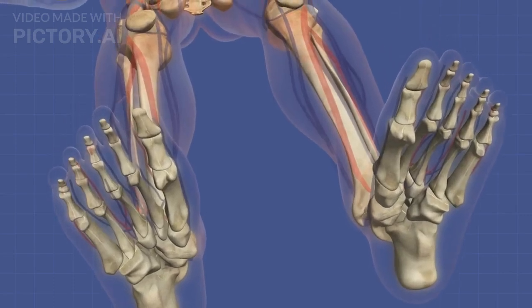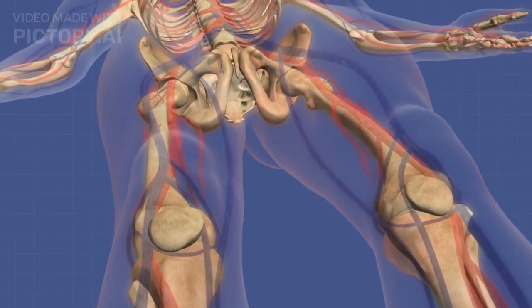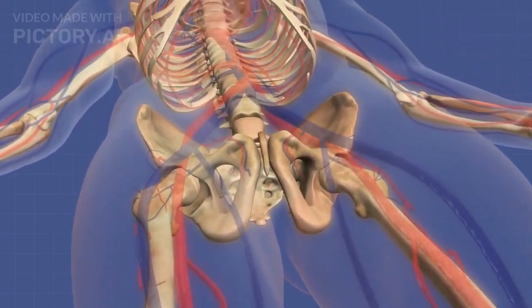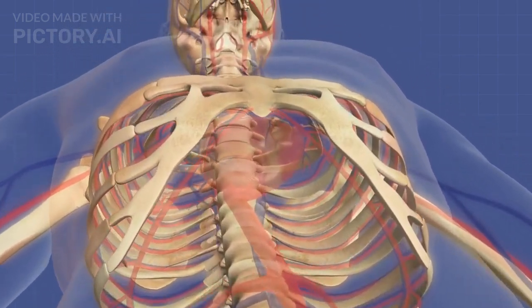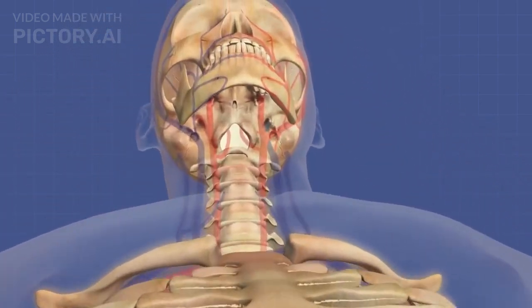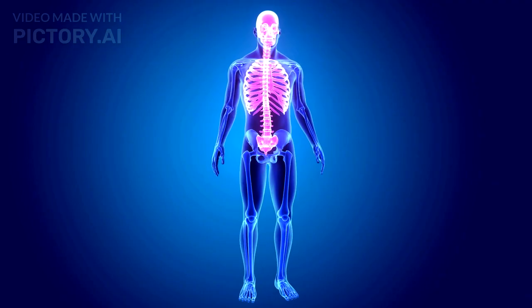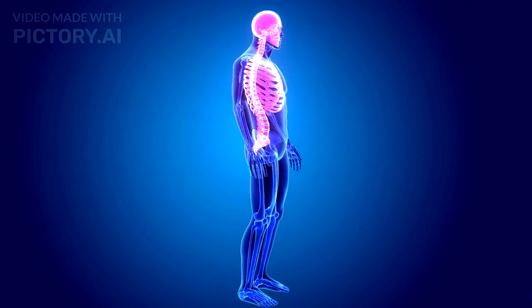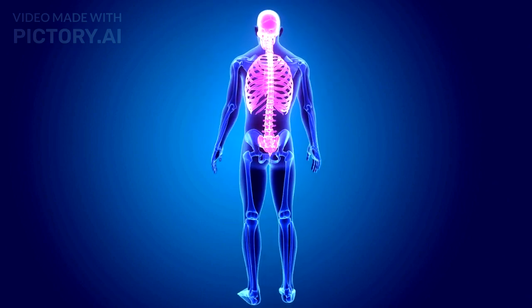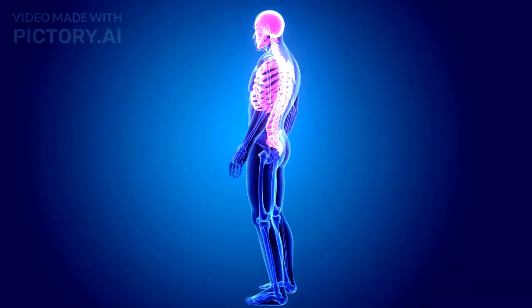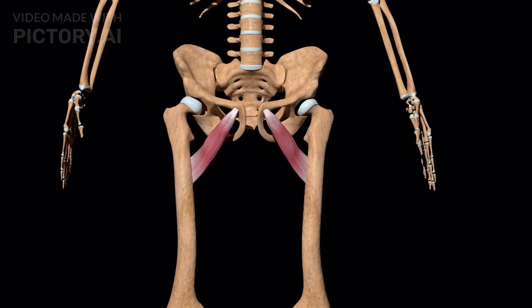The skeletal system provides structural support for movement and locomotion. It consists of bones, cartilage, joints, and ligaments. The human skeleton is divided into two parts. First is the axial skeleton, consisting of the skull, vertebral column, and rib cage. Second is the appendicular skeleton, which contains the limbs and girdles.